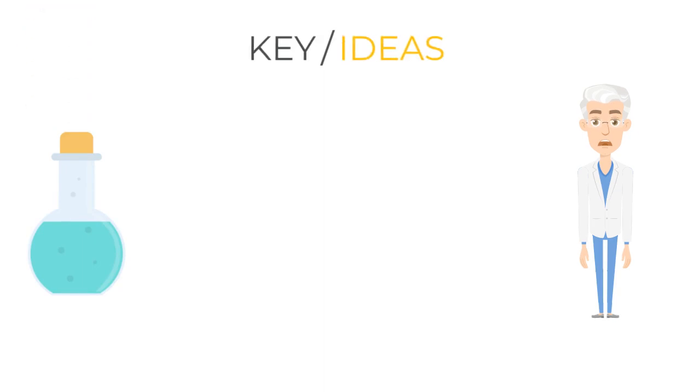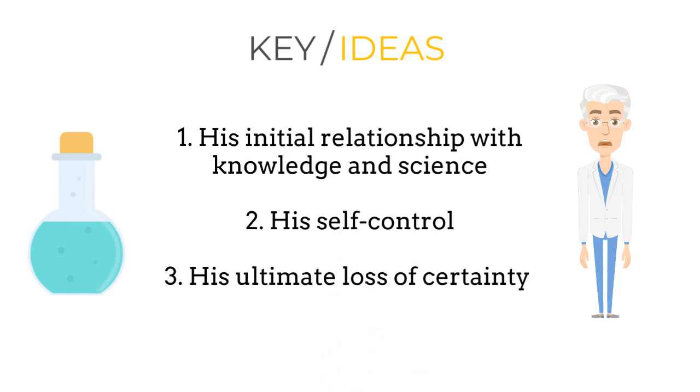We're going to look at three key ideas for Lanyon: his initial relationship with knowledge and science, his self-control, and his ultimate loss of certainty.